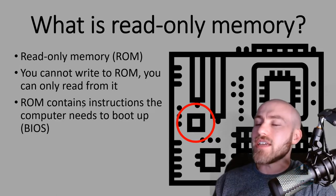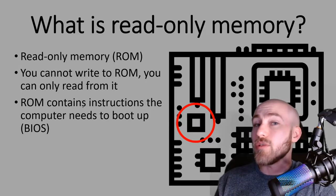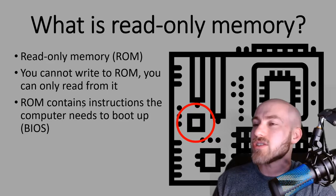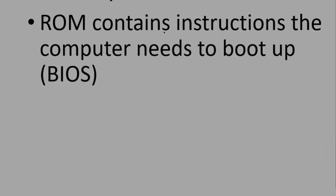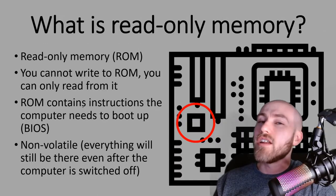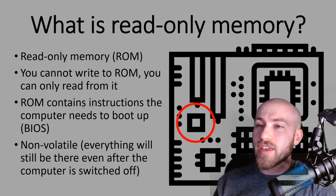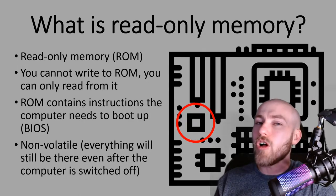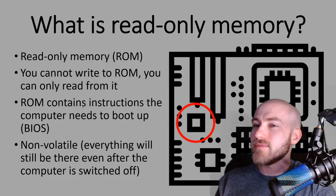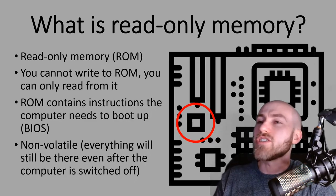The reason for that is because it contains some very important information — the instructions that your computer needs to boot up, which is your BIOS. If you were to accidentally overwrite that information, your computer might not be able to boot up again. Unlike RAM, which forgets everything when you turn it off, your ROM will remember it all because it is non-volatile. Everything is still there even after the computer is switched off.